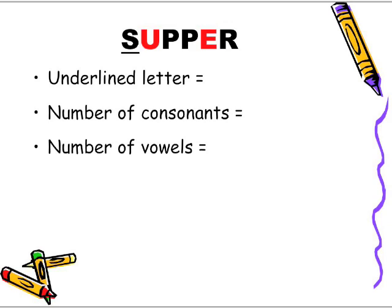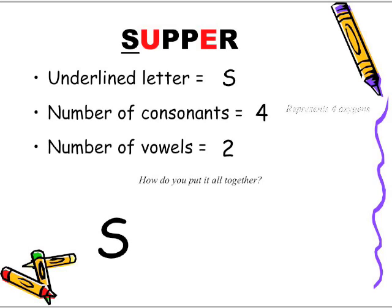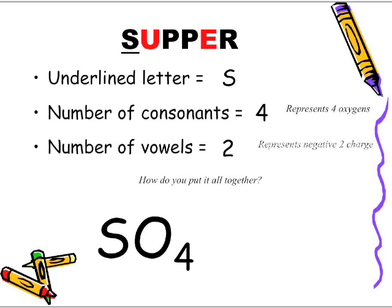"Supper" — the underlined letter is S. Number of consonants: four. Number of vowels: two. So we start with S; four consonants means four oxygens: SO4. Two vowels means two negative charges: SO4 negative two. Because we're referencing sulfur with the A-T-E ending, we call this compound sulfate.